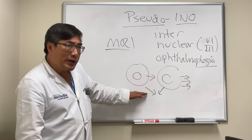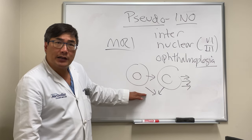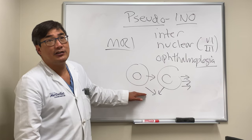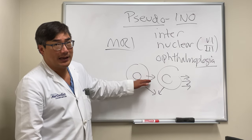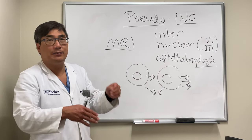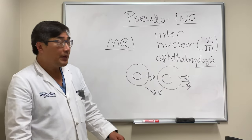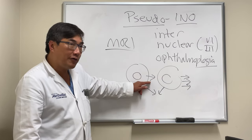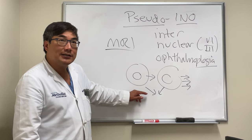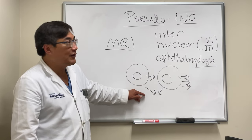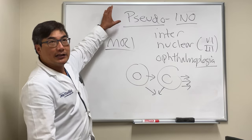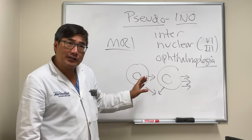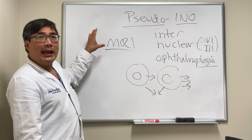However, if we can overcome the adduction deficit with convergence, that suggests it's a real INO, because you cannot overcome a myasthenia-related adduction deficit, or one caused by muscle damage or a tumor, with convergence. So it's critically important that you perform a convergence effort to see if you can overcome it, as this is one of the key differentiating features that helps distinguish a pseudo-INO from a real INO.